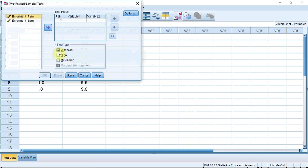I just need to tell SPSS which variables to use. I'm going to click in the variable 1 box, select the enjoyment at 7am and enter. It's now asking me for variable 2, which is the enjoyment at 6pm, and I'm going to enter that. I can now press OK.